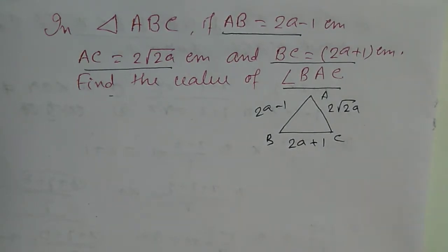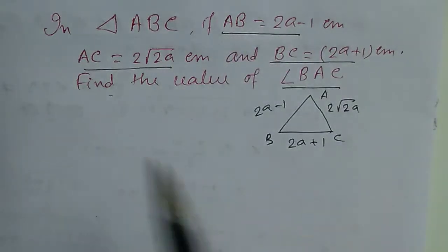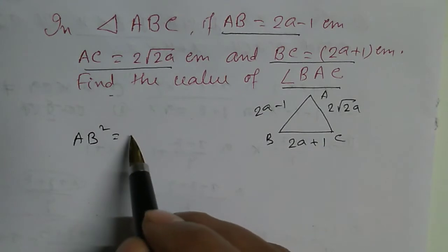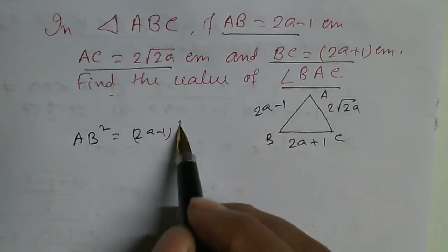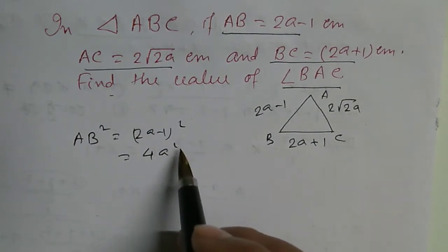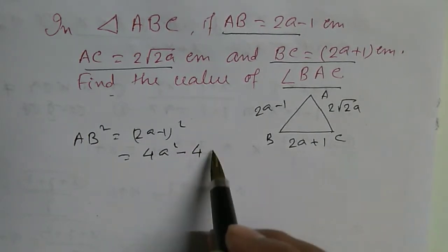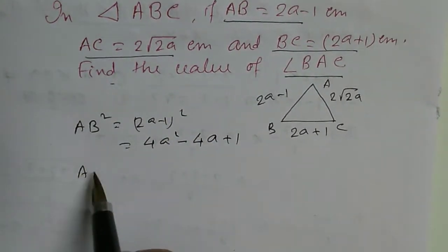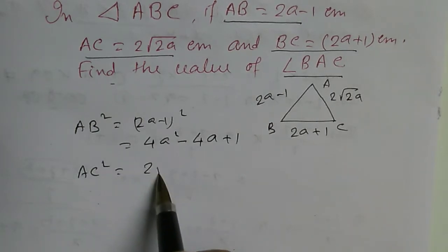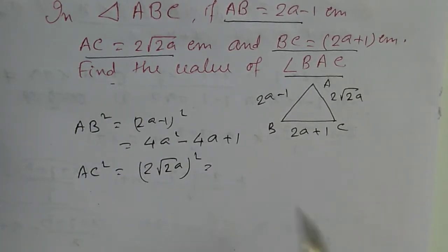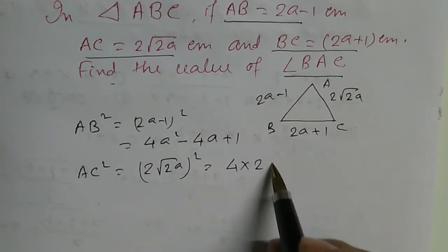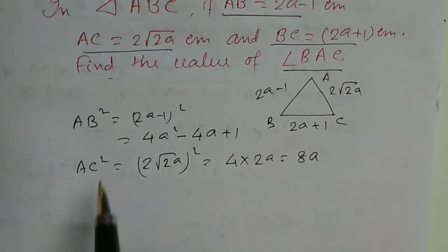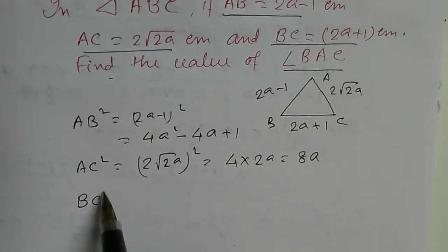At first, we find the square of AB. AB square equals 2a minus 1 whole square, equals 4a square minus 4a plus 1. Now, square of AC, 2 root 2a whole square equals 4 into 2a equals 8a.